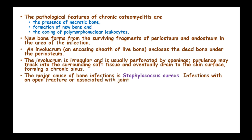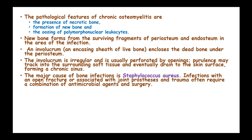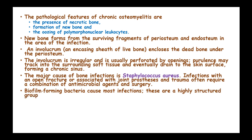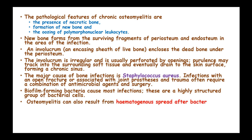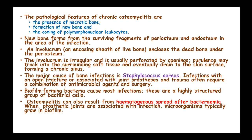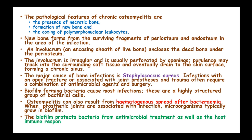The major cause of bone infection is Staphylococcus aureus. Infection with an open fracture or associated with joint prosthesis and trauma often requires a combination of antimicrobial agents and surgery. Biofilm-forming bacteria cause most infections; these are highly structured groups of bacterial cells. Where prosthetic joints are associated with infection, microorganisms typically grow in a biofilm, which protects the bacteria from both antimicrobial treatment and the host immune response.